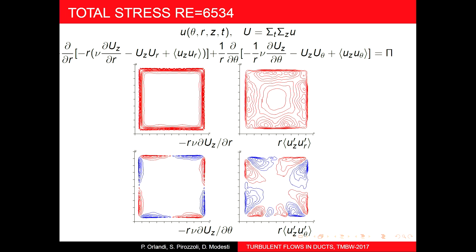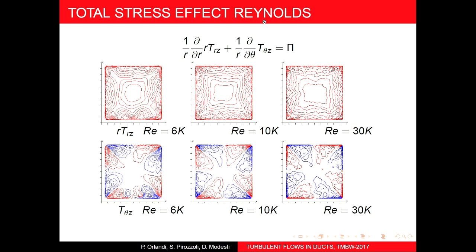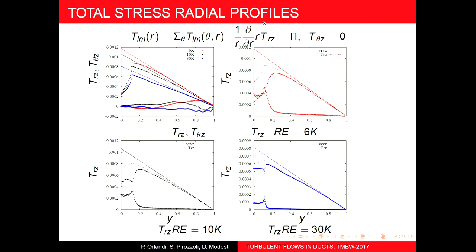Showing the total stress: I can have the total stress TRZ and also TZT, which should sum to zero. The viscous stress is concentrated near the wall, while the Reynolds stress is distributed everywhere. Showing Reynolds number dependence at Re = 6000, 10000, and 30000, there is a tendency toward a straight line obtained from the pressure gradient needed for steady state.